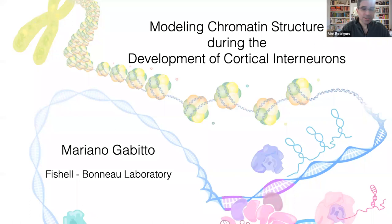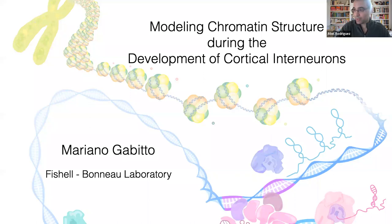It's a pleasure for me to introduce Mariano. Mariano moved to Seattle earlier this year to join the Allen Institute for Brain Science, where he is an assistant investigator. His research focuses on applying statistical and machine learning methods to decipher how networks of genes and molecules within cells interact to give rise to the cellular diversity observed in the brain.